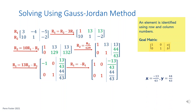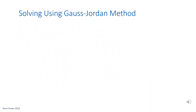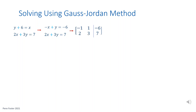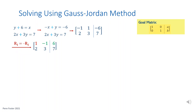This is the point where the two lines intersect. Let's try the same method on a different system. First, rearrange the first equation to bring the x term to the left side and the constant to the right side. Now write the system in matrix form. Element 1,1 is an easy fix — multiply the first row times negative 1: negative 1 becomes 1, 1 becomes negative 1, and negative 6 becomes 6.